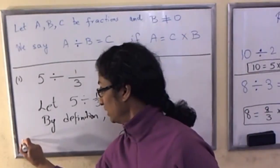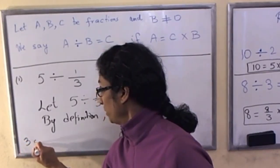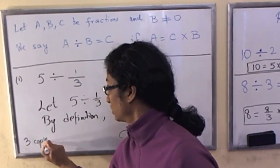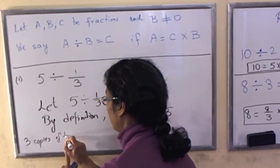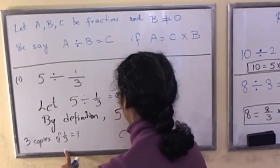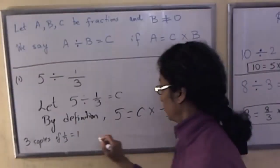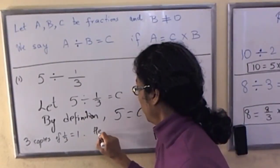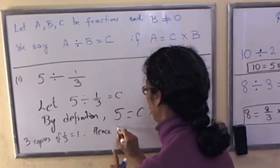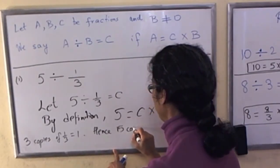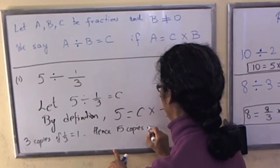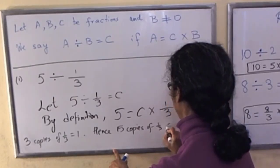And the reasoning is 3 copies of 1 third equals 1. And if you like, you can write a longer statement. Hence, 15 copies of 1 third equals 5.